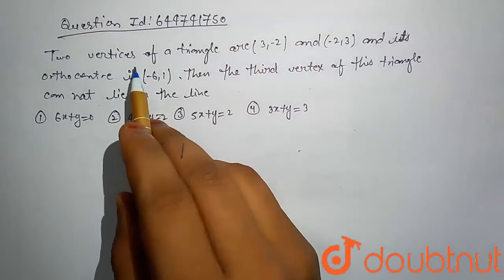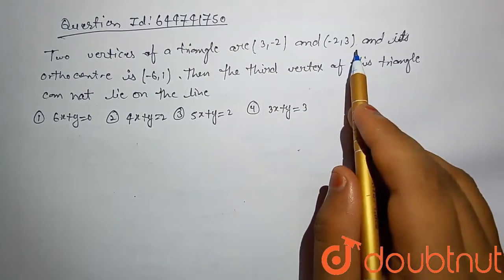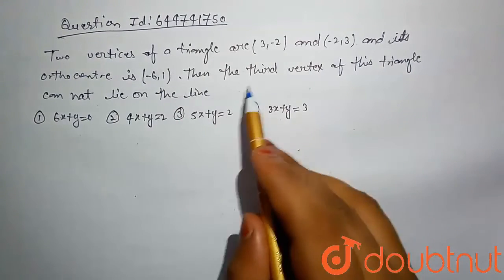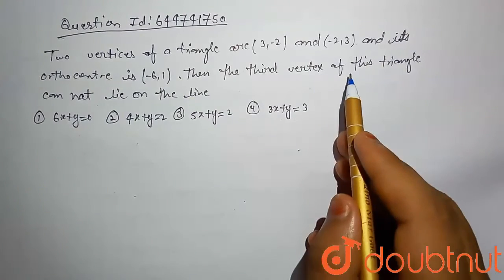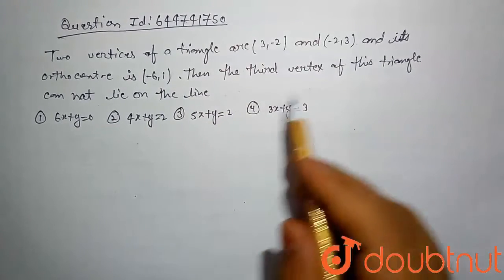Two vertices of a triangle are (3, -2) and (-2, 3), and its orthocenter is (-6, 1). Then the third vertex of this triangle cannot lie on the line. We have to tell which line equation the third vertex does not satisfy.